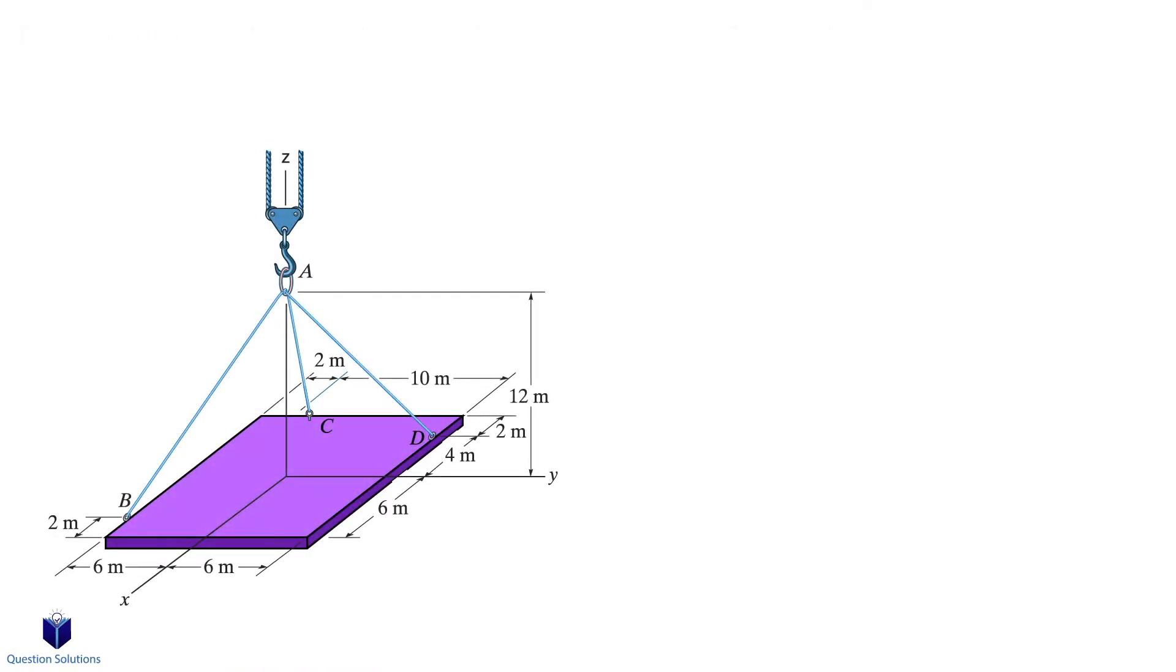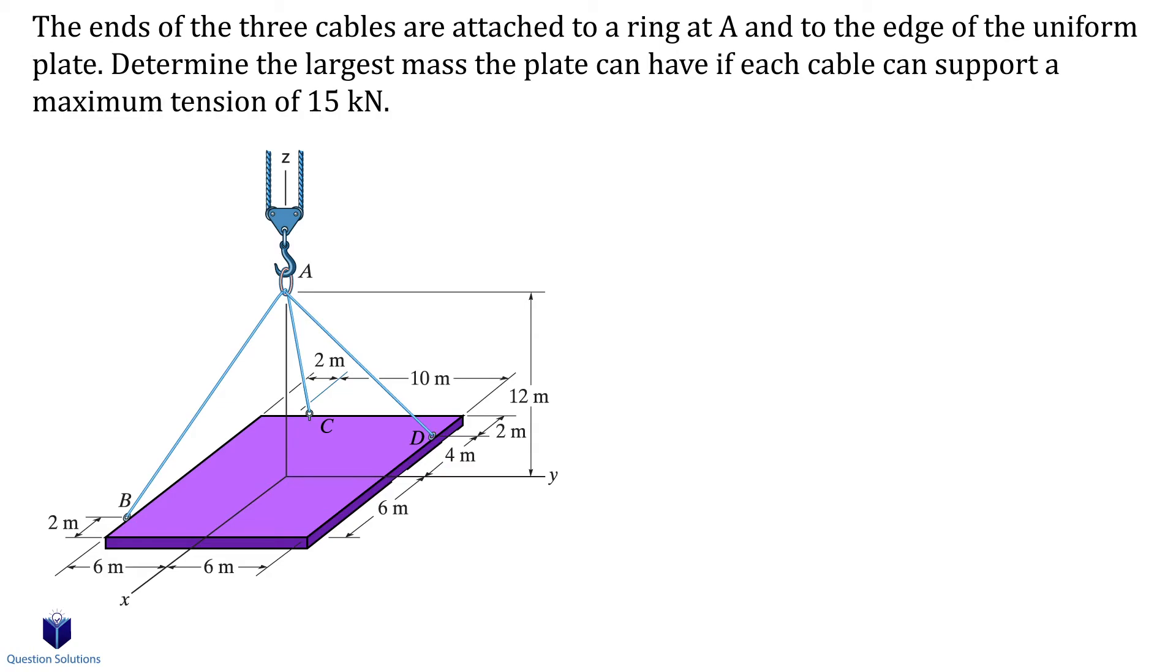Let's take a look at this problem where a plate is hung from cables. Each cable can support a maximum tension of 15 kilonewtons and we need to find the largest mass of the plate that can be hung. So first we need to express the forces in each cable in Cartesian form. The process is identical to what we did before.